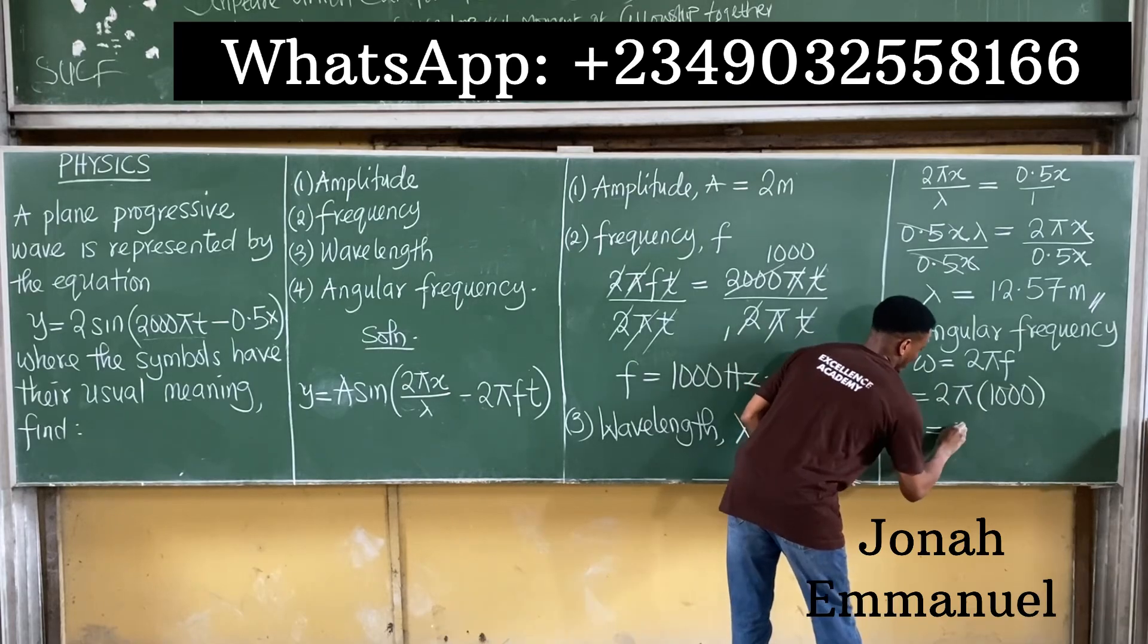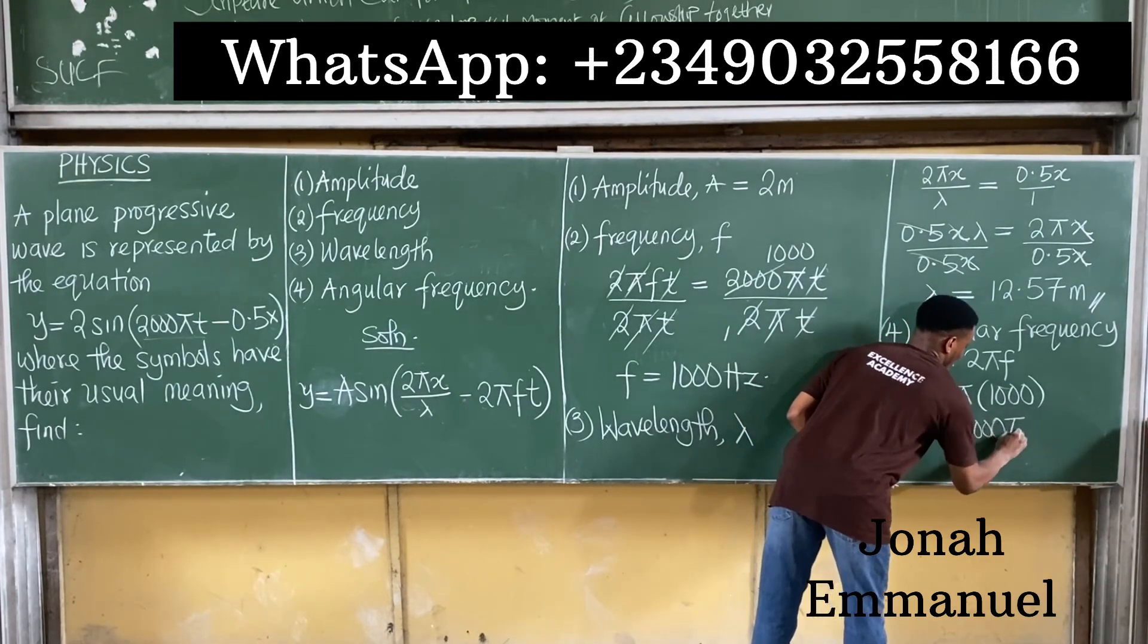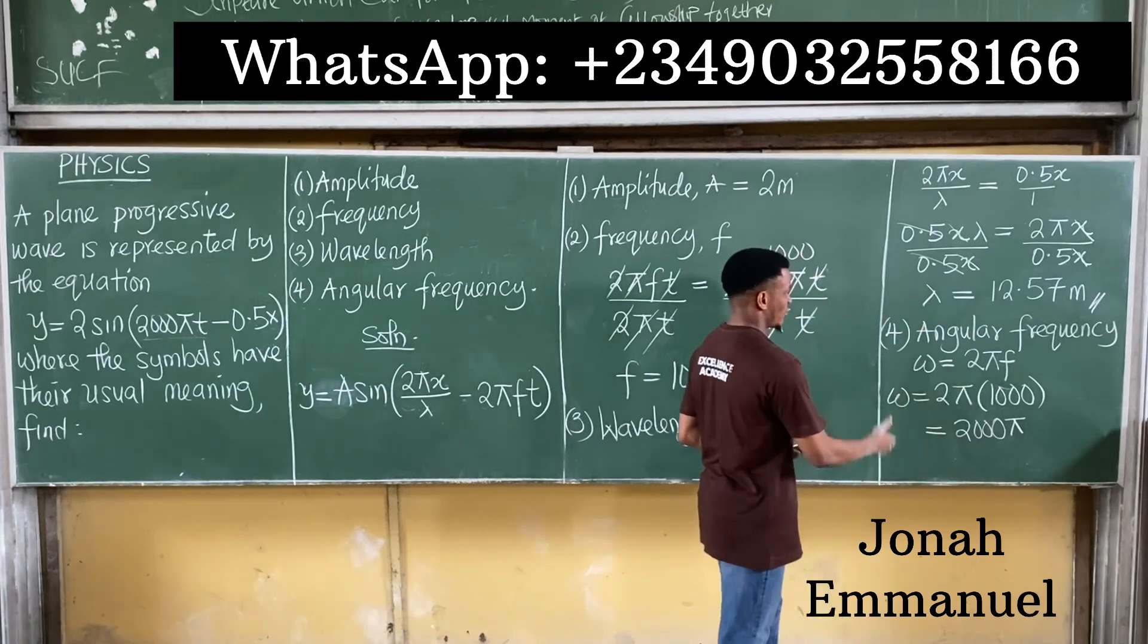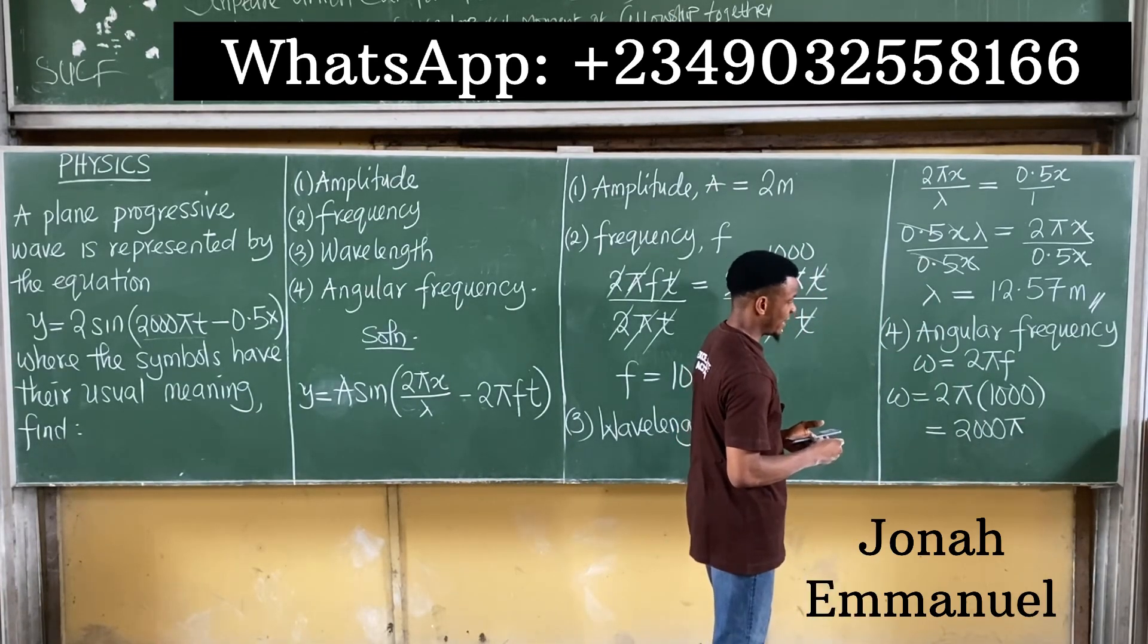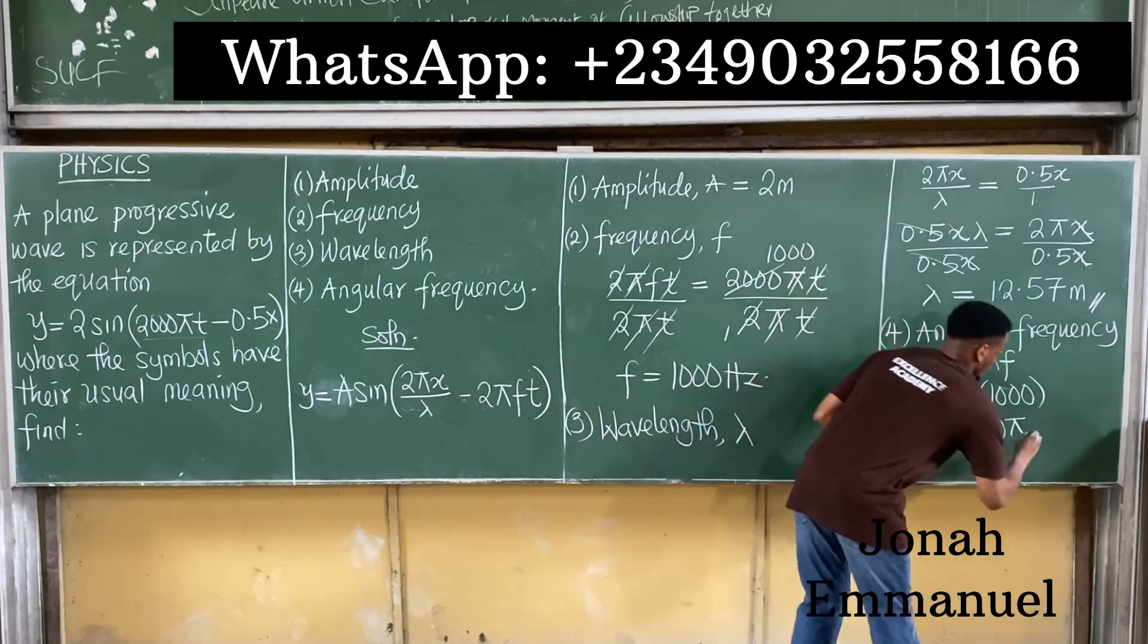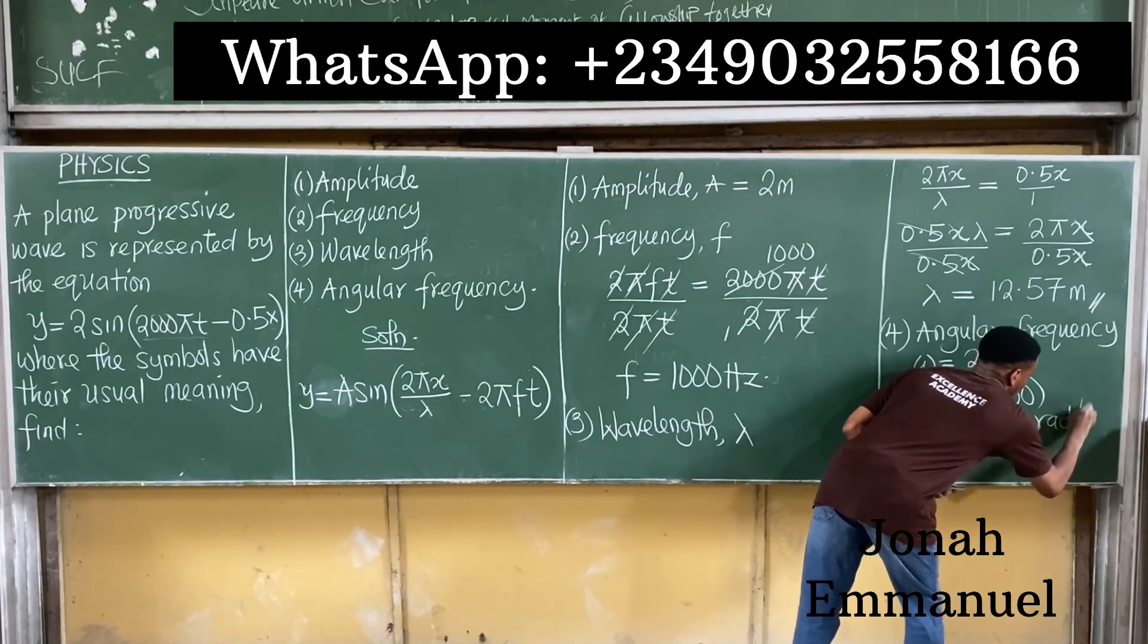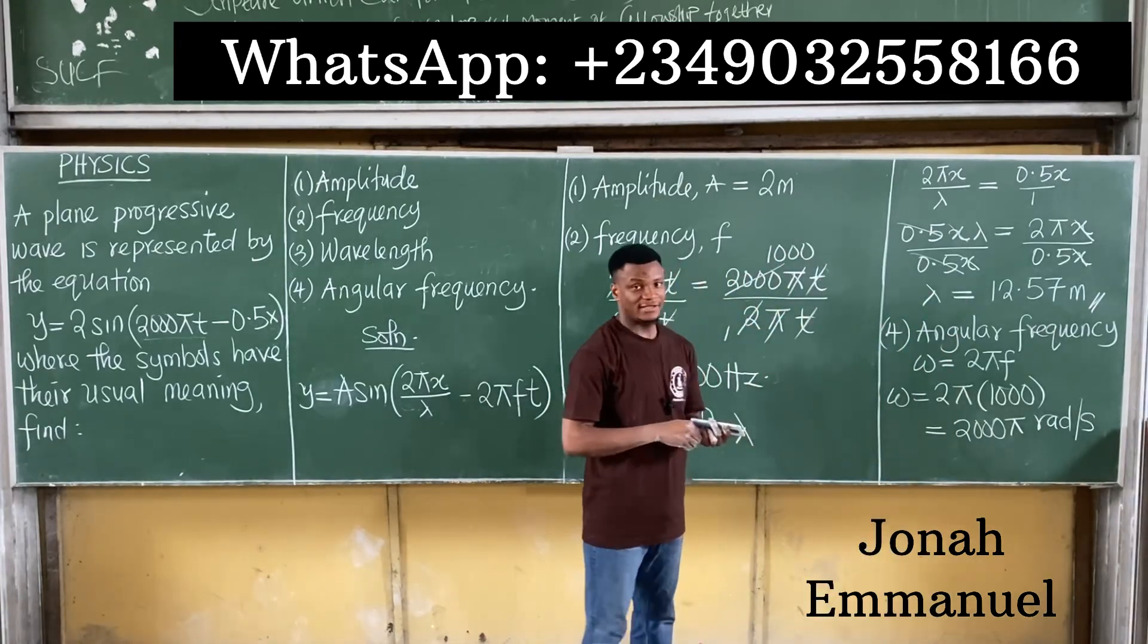Multiply this. This gives you 2 times 1000. 2000π hertz. That becomes the angular frequency. So 2000π, angular frequency is measured in rad per second. So the answer is 2000π rad per second. That's your value.